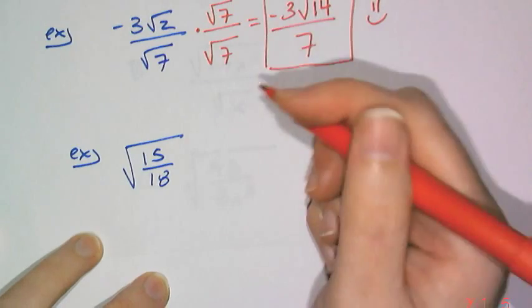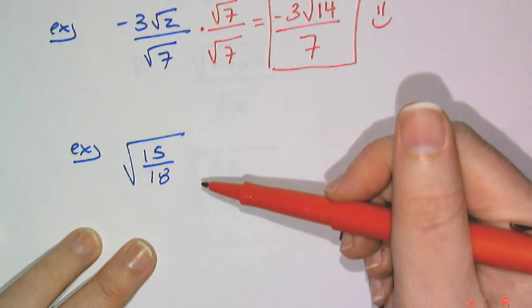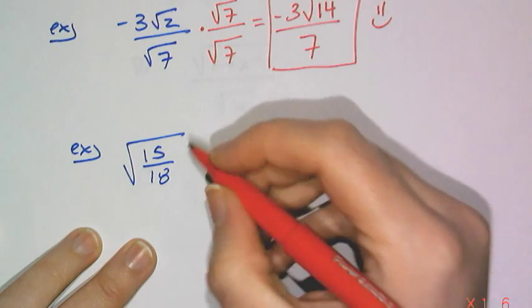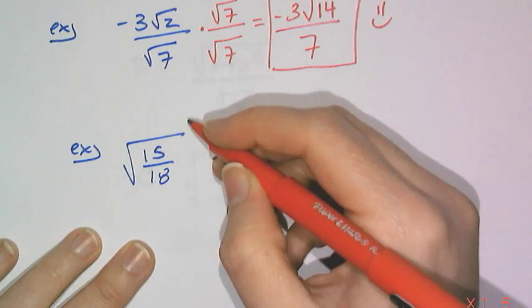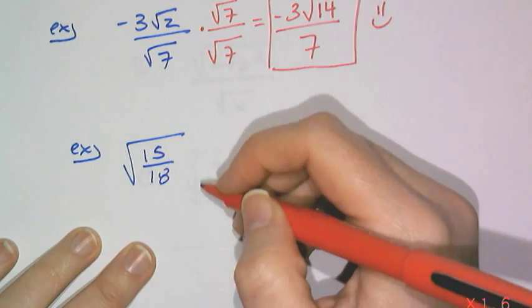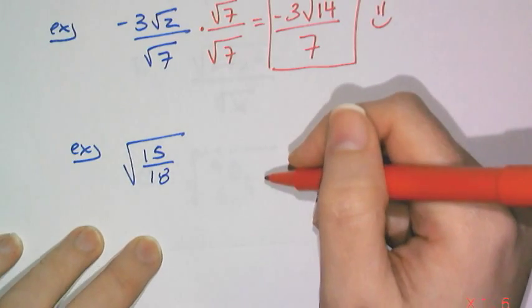And now, finally, we're going to look at this example, the square root of 15 over 18, to illustrate to you one point. I can use my division property of radicals and say this is square root of 15 over square root of 18, and then simplify that, and then rationalize the denominator as necessary.